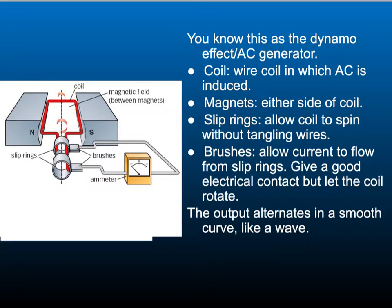You know this as the dynamo effect or AC generator. It consists of a coil, which is the wire in which AC is induced. It has magnets at either side of the coil, so there's a magnetic field between them.